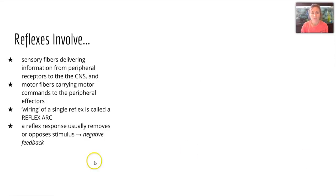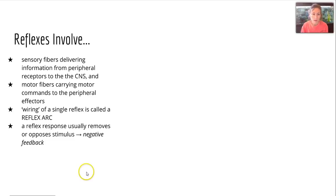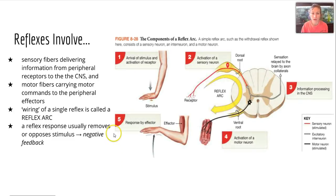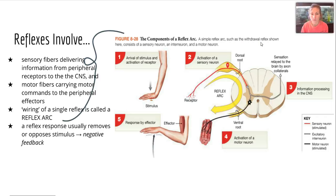Reflexes involve your sensory fibers — and whenever I say fibers, think axons — delivering information from peripheral receptors to the central nervous system, and then motor fibers carrying motor commands to the peripheral effectors, which are usually some kind of organ or organ system. The wiring of a single reflex is called a reflex arc, and there's a really good diagram in your textbook showing the components using the withdrawal reflex as an example.